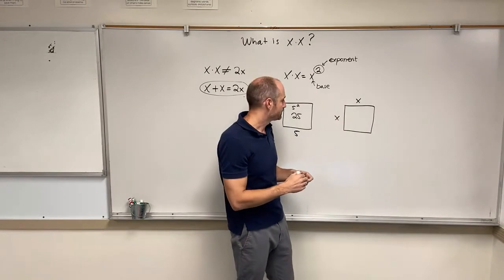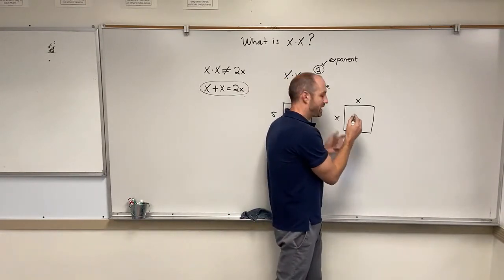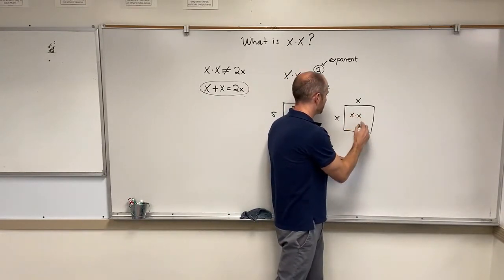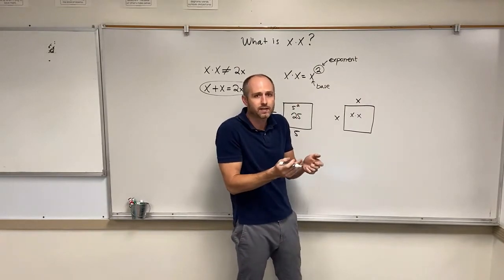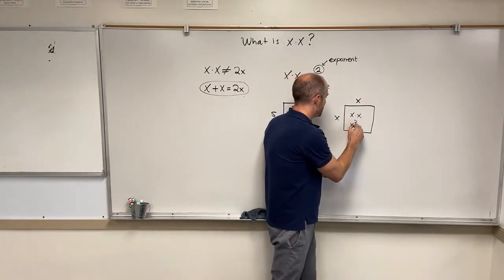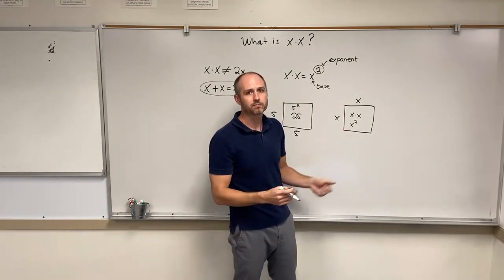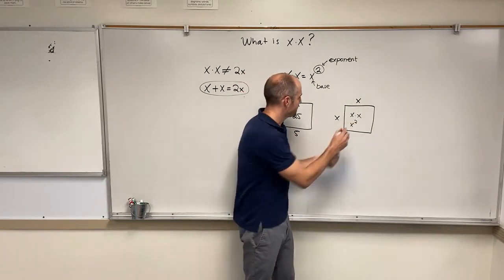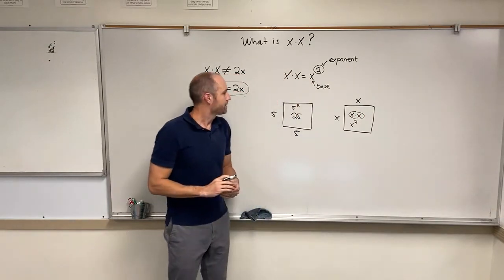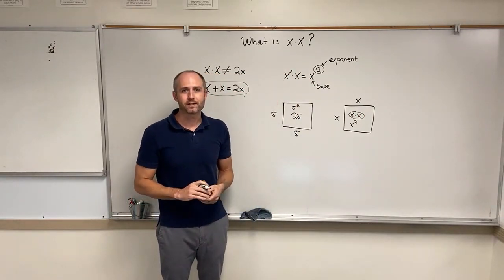So we would get, what we'd have for the area of this square is x times x. And another way of writing that is x to the power of 2, because that means multiply this number, whatever it is, by itself. And that's this. Okay, that's it for this one. Thanks for watching.